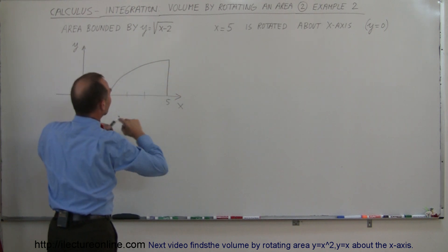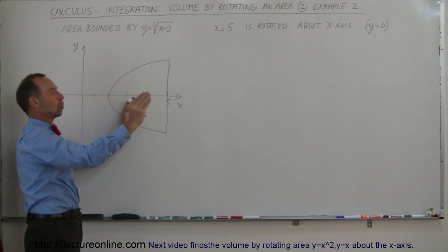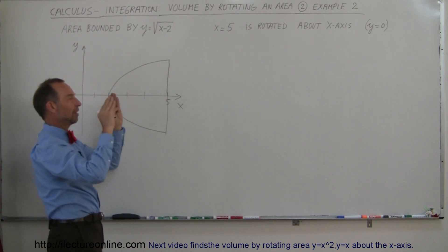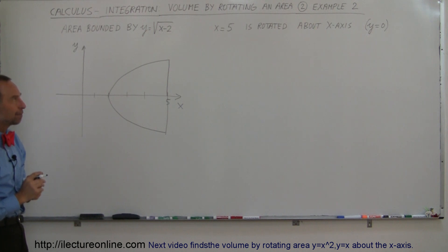If we then rotate that about the x-axis, we get something like this that would have a volume to it. It's kind of like a bowl shape or parabolic shape object facing this way, positive x direction. We're trying to find the volume of that.